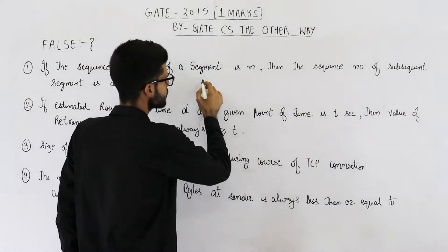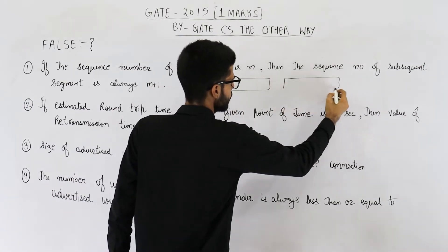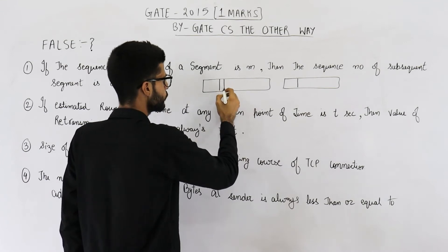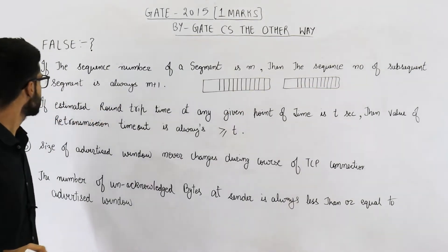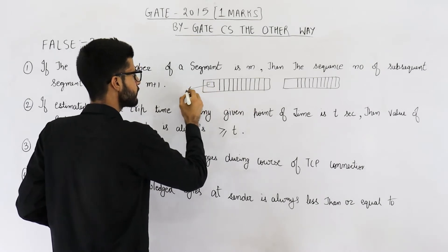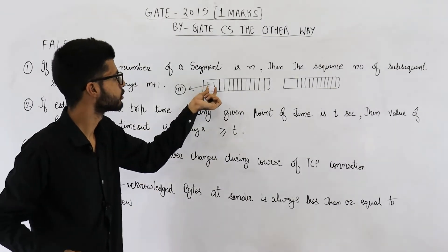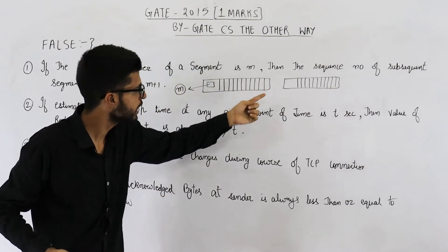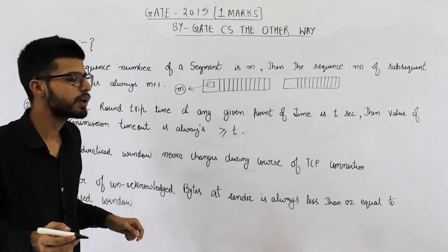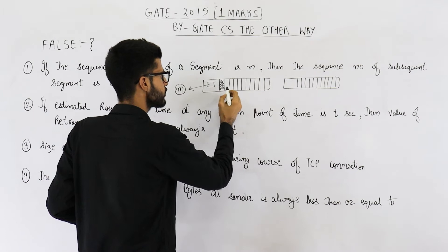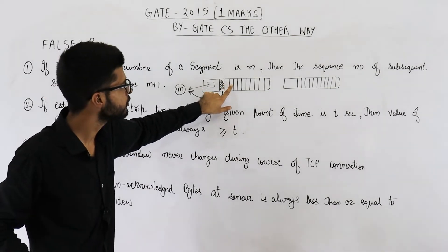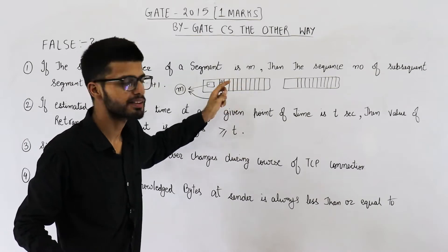Consider two TCP segments, each with a TCP header and some data bytes. If the sequence number of the first segment is m, that means the first byte has sequence number m. The second byte is m+1, then m+2, m+3, m+4, m+5, m+6, and so on.